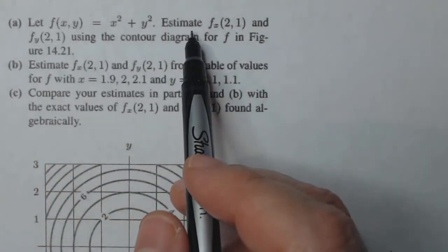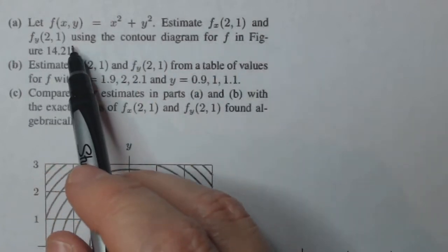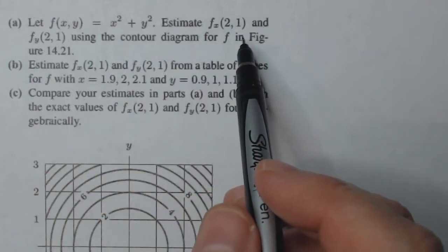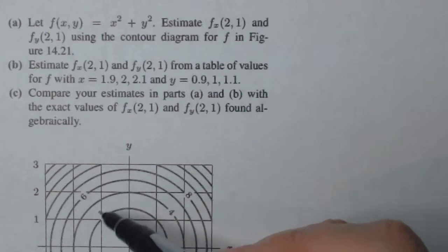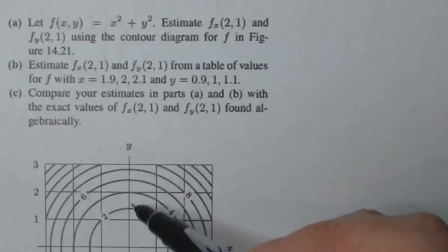So part a says we're supposed to estimate f sub x at two one and f sub y at two one using the contour diagram for f in the figure below. So this is the contour diagram right here, and we're going to come down here and take a look at how we can estimate them.